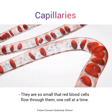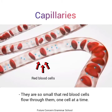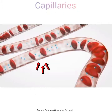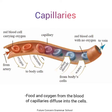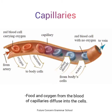Capillaries are so small that red blood cells flow through them one cell at a time — یہ size میں اتنی چھوٹی ہوتی ہیں کہ red blood cells جو کہ ان میں سے گزرتے ہیں، ایک وقت میں ایک ہی cell گزر سکتا ہے۔